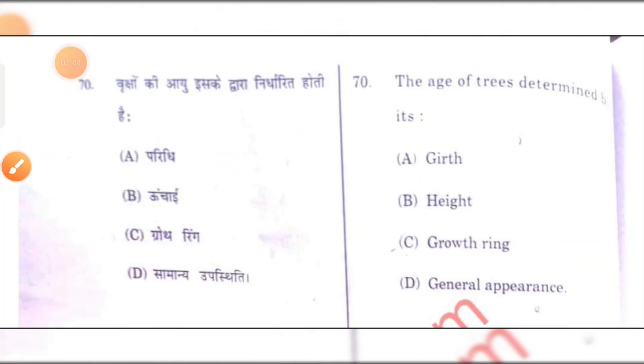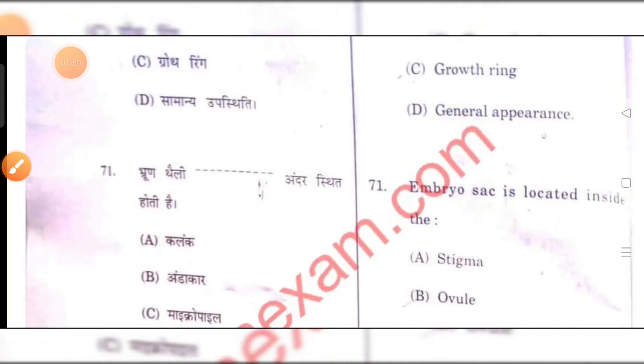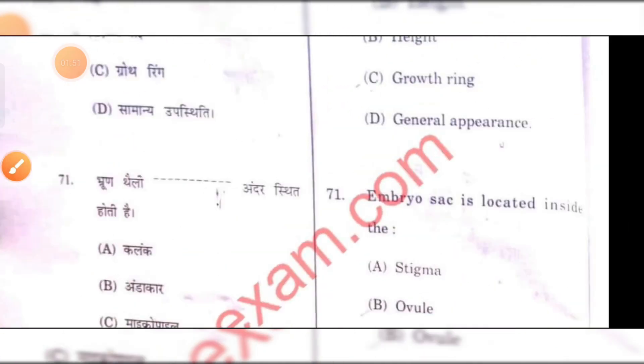The age of a tree is determined by its growth rings. It's a repeated question. Growth ring is the right answer.